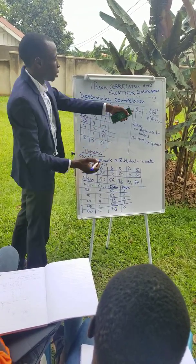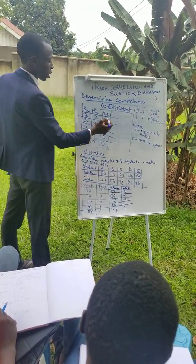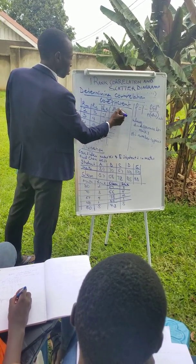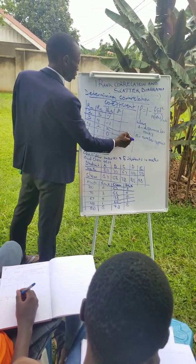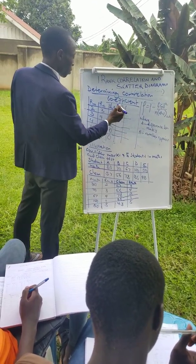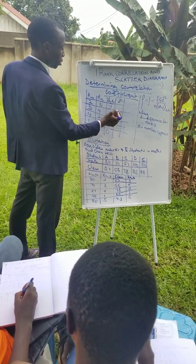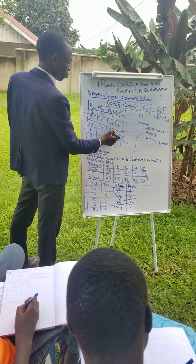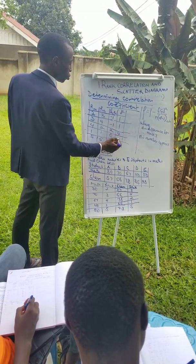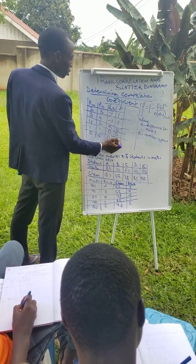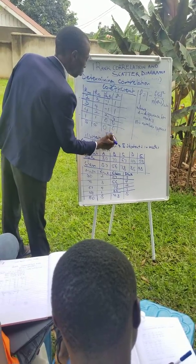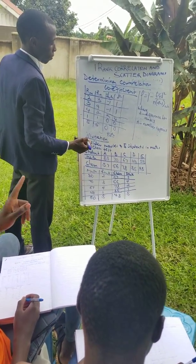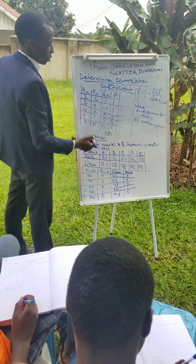They want the summation of d squared, so we get d squared now. Negative 1 squared equals 1; negative 1 squared equals 1; 2 squared equals 4; 0 squared equals 0; 0 squared equals 0. So our summation of d squared equals 1 plus 1 plus 4 plus 0 plus 0, which is 6.